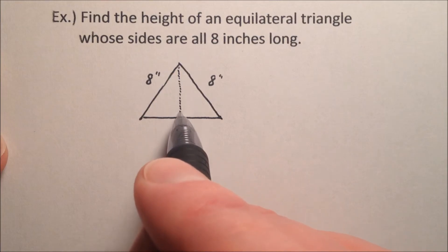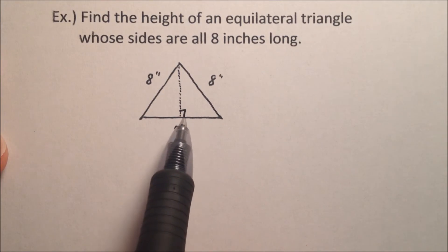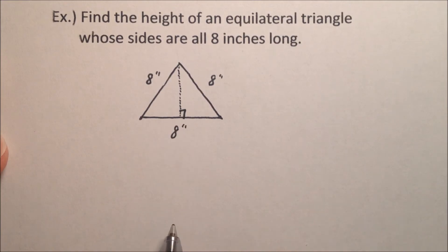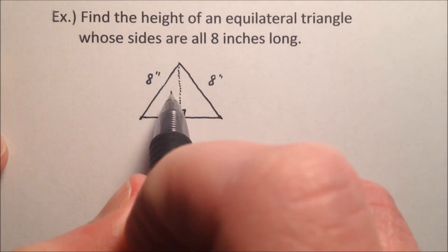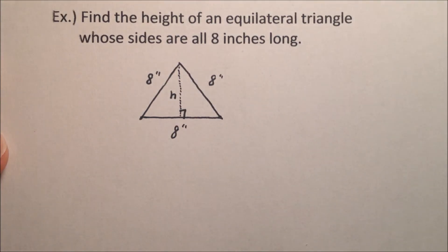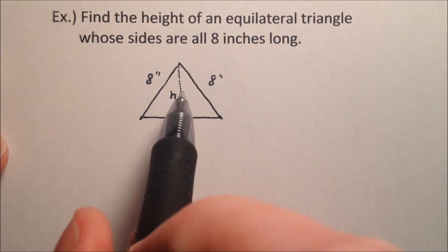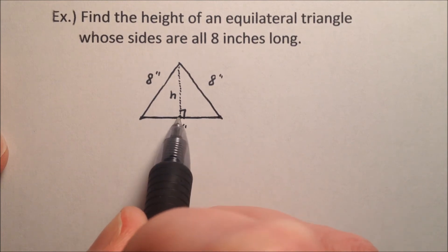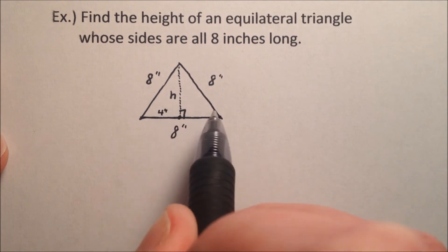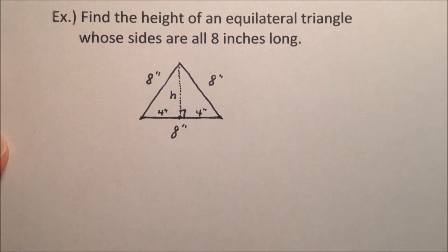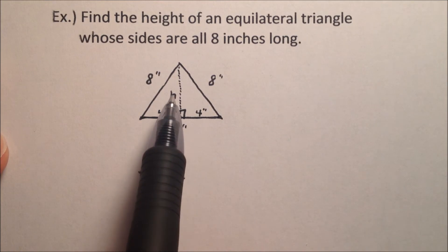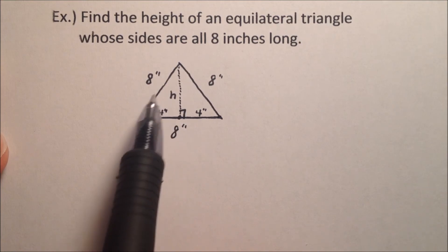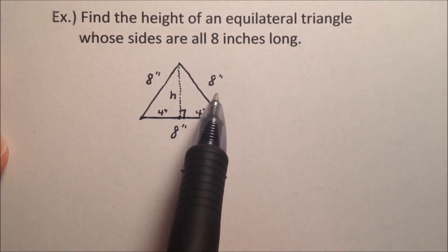So I can kind of draw this guy right down there. And the height, remember, is always perpendicular to the base, or we can say it forms a right angle. So this height, we can call H. And it looks like, since this is going to be right down here, it's going to break this base up into two equal parts. So each one of these will be 4 inches. So we've got a couple of identical right triangles here. We've got a right triangle that's facing over to the left, and a right triangle that's facing over to the right.